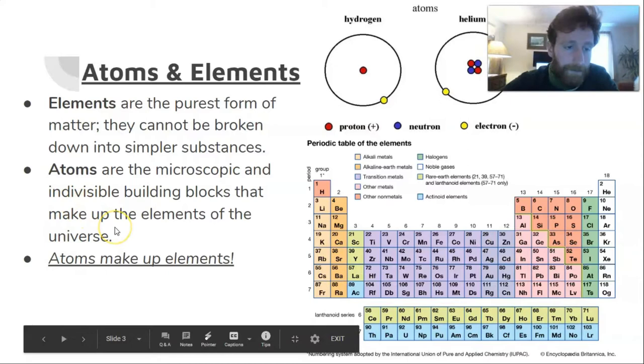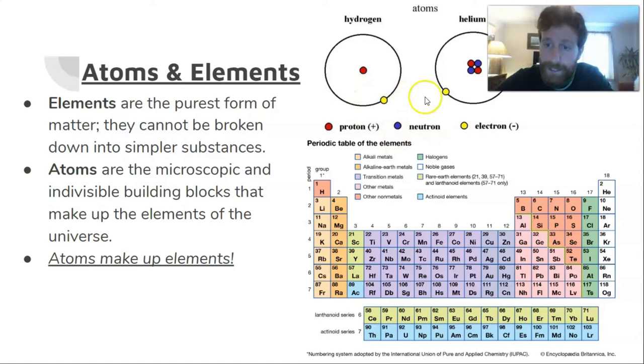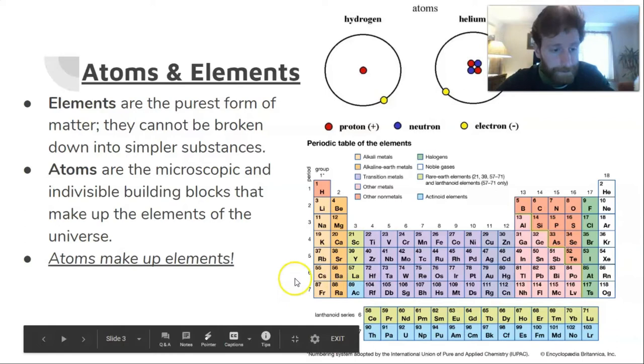With that said, one subatomic particle that can be removed very easily is the electron, and we see that a lot in chemistry as we go through chemical reactions and bonding. All elements are arranged systematically on what we call the periodic table of elements. Here's a periodic table. As you go to do your assignment today, you're going to make sure you have access to a periodic table. If you Google 'periodic table,' you'll find a bunch. Maybe even print one off.